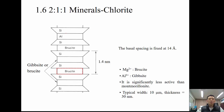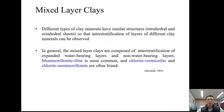Chlorite is a 2:1:1 mineral — a 2:1 semi-basic unit plus an additional octahedral brucite sheet — stacked with ionic bonding, making it very stable and significantly less active than montmorillonite. Mixed-layer clays also exist, where different clay mineral types inter-stratify. Montmorillonite/illite is the most common mixed-layer combination; chlorite/vermiculite and chlorite/montmorillonite are also often found.